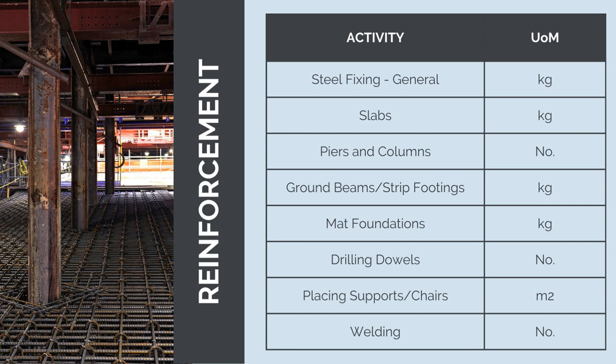For any reinforcement, the unit of measure will be the weight. The weight of steel is how we then estimate material and installation costs. The only exception will be for piers and columns where pre-fabricated cages are used. For these, we'll need to know the number of piers. Other quantities will be the number of dowels for any construction joints, any supports or bar chairs, and any on-site welding that is required.